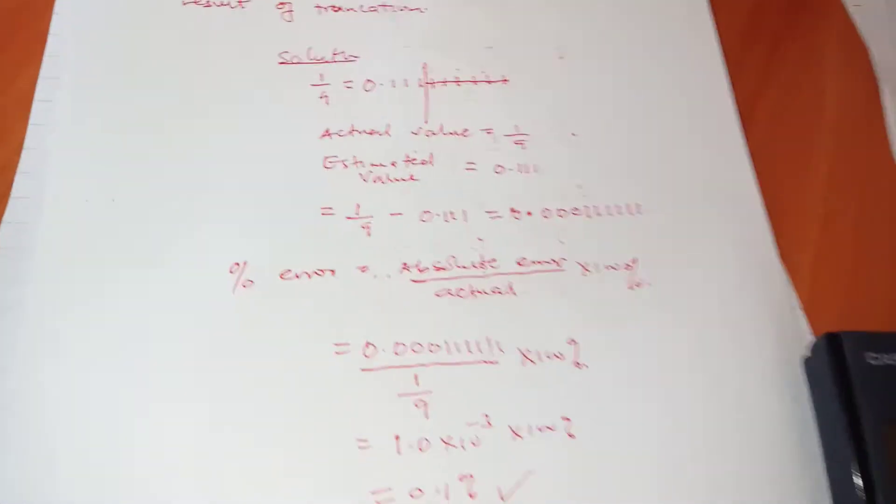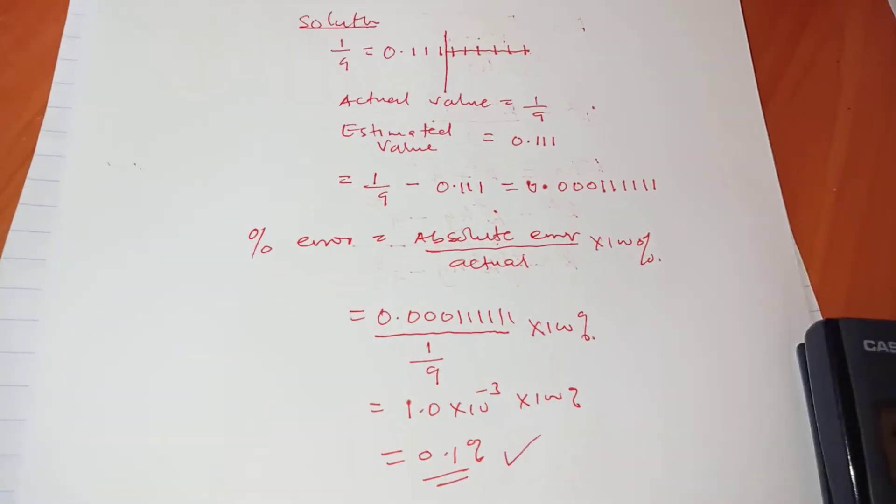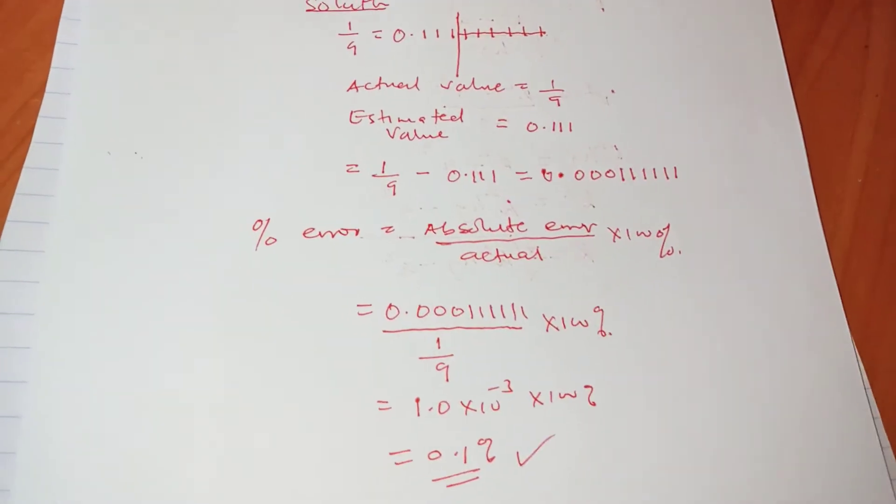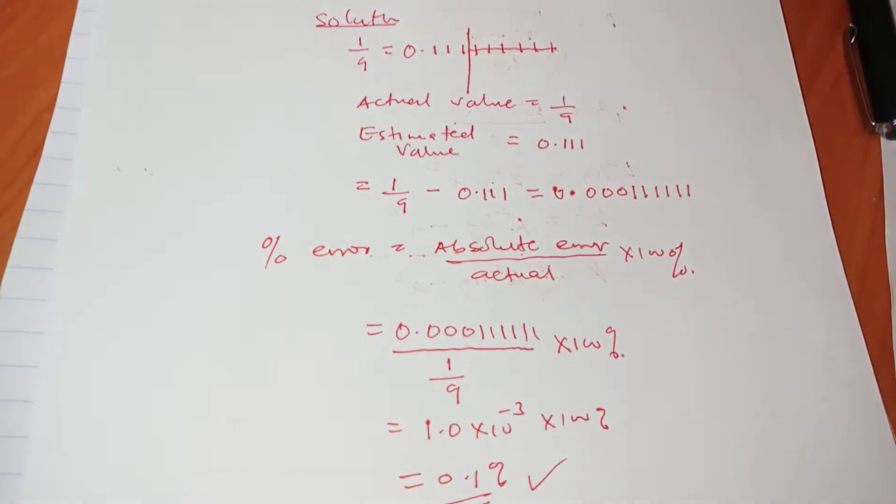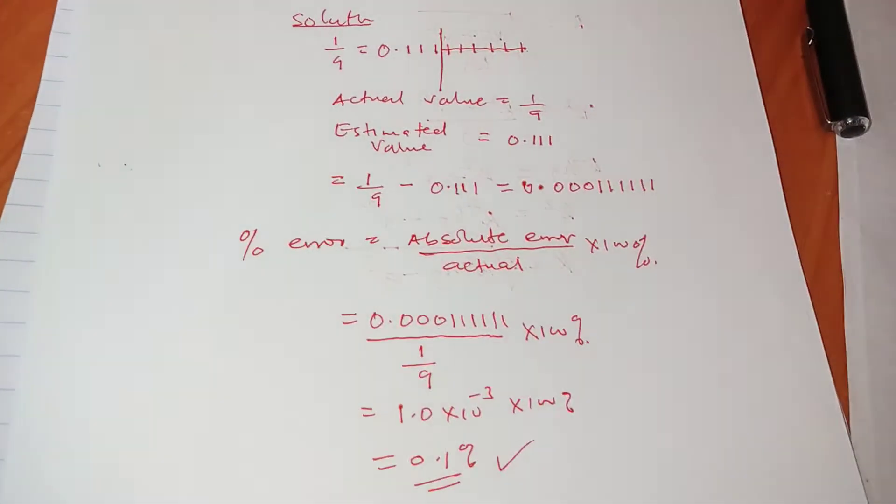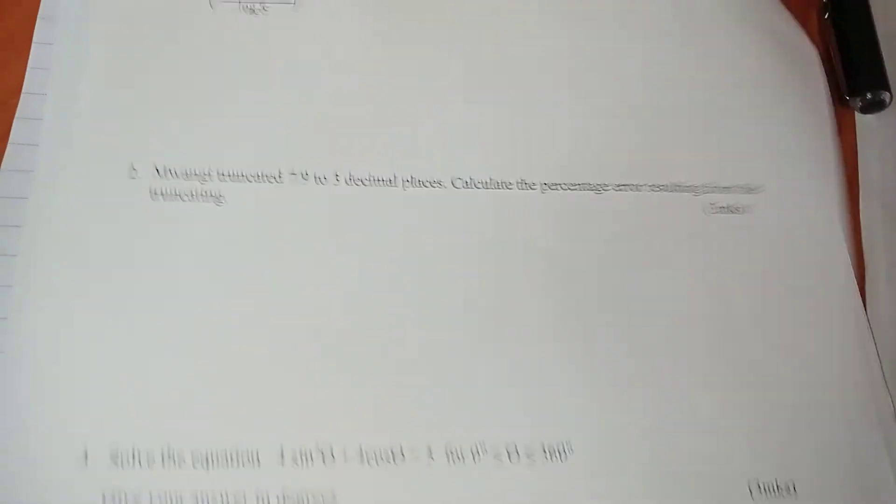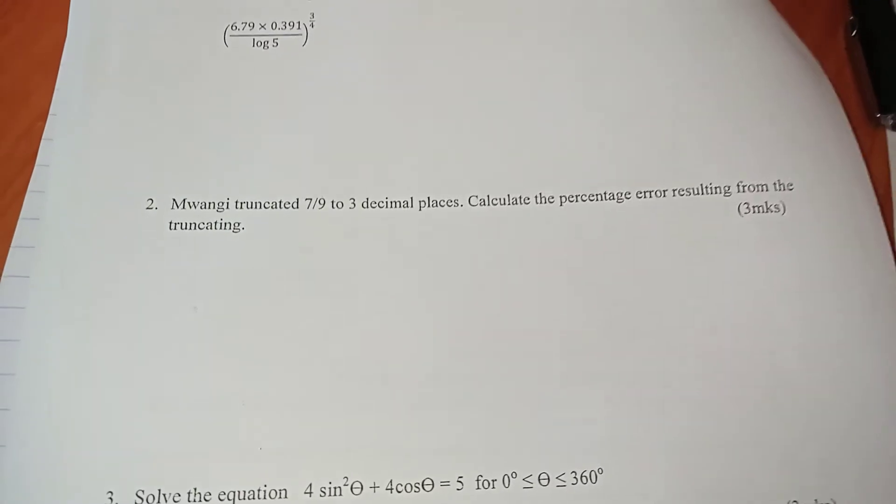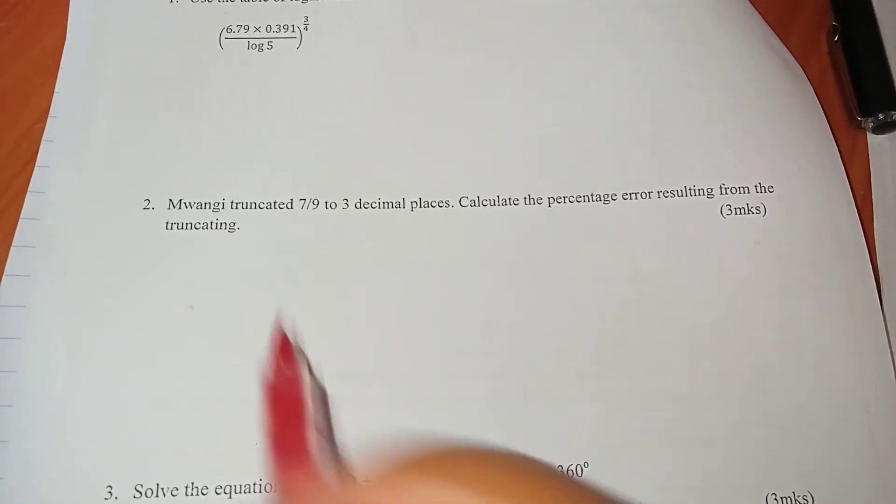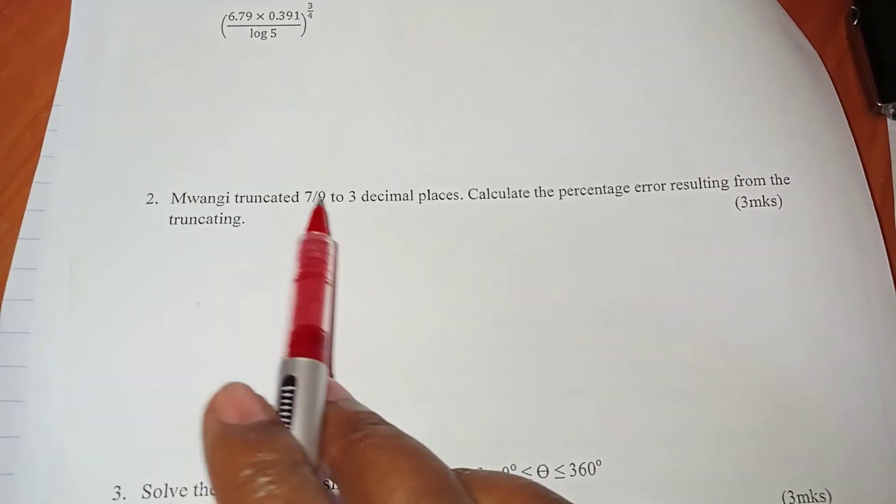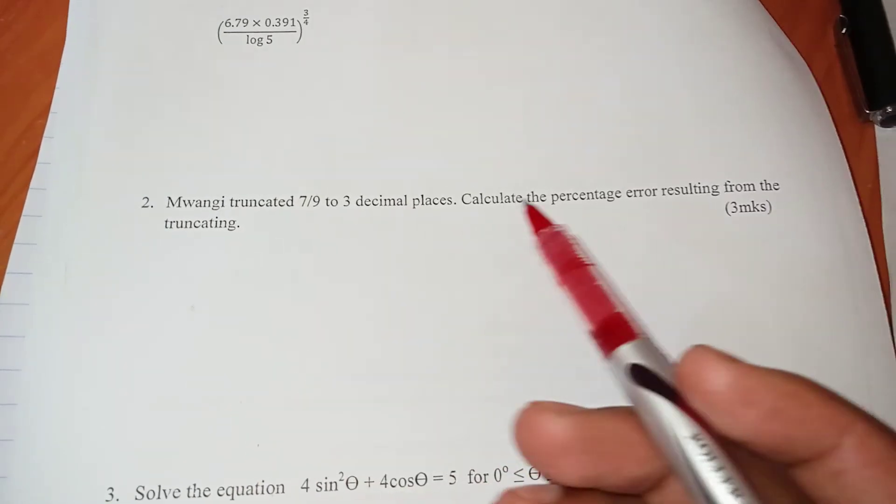So 0.1 percent is the error that arises after our Fuller truncates one over nine to three decimal places. That's the solution to that problem. You got another problem here and we have a different person altogether trying to truncate this number here - seven over nine to three decimal places coincidentally.